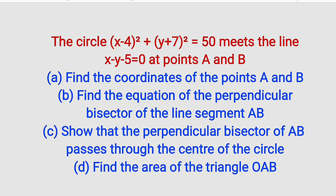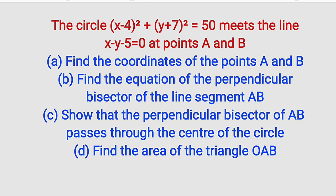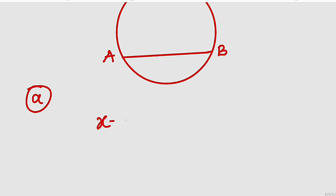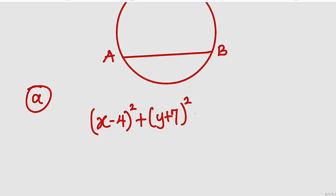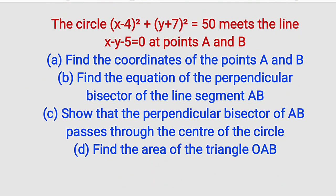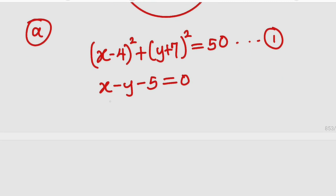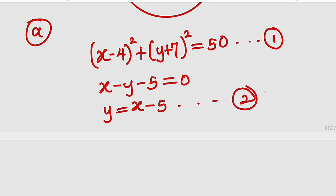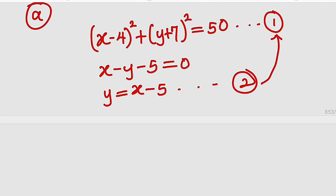The equation of the circle is x minus 4 whole squared plus y plus 7 whole squared equal to 50. This is equation number 1. Equation number 2, which is the line, we have x minus y minus 5 equal to 0. Let us make y the subject here. If you take negative y to the other side it becomes positive, so y is equal to x minus 5. So all we have to do is plug this equation into equation 1.